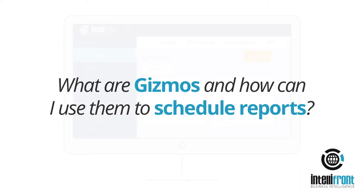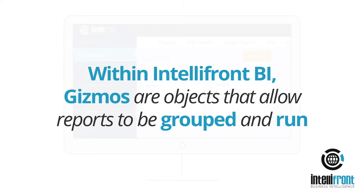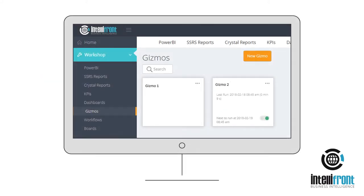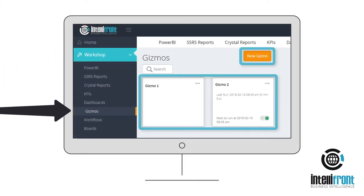What are gizmos, and how can I use them to schedule reports? Within IntelliFront BI, gizmos are objects that allow reports to be grouped and run. Custom tasks, schedule triggers, and destinations can also be added to any gizmo. Go to the Workshop Gizmos tab to view and create them.